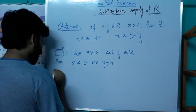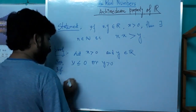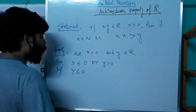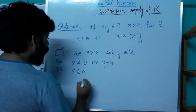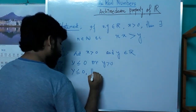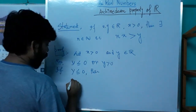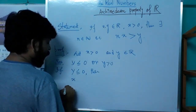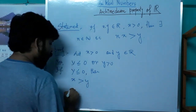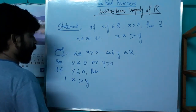If y is less than or equal to 0, then obviously x is strictly bigger than y. So here n is nothing but 1.